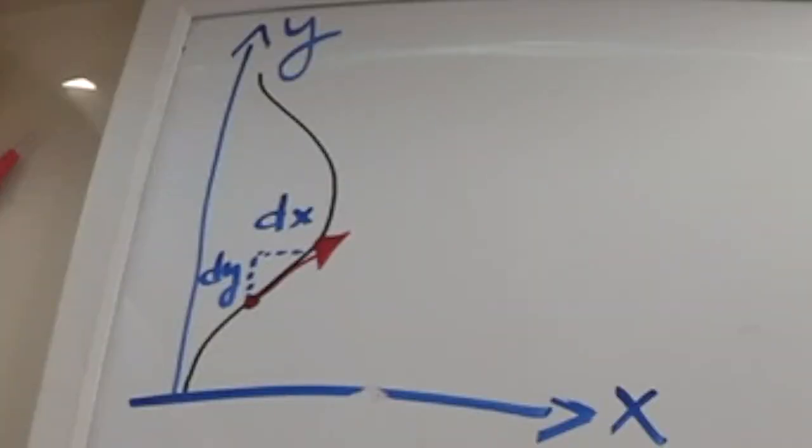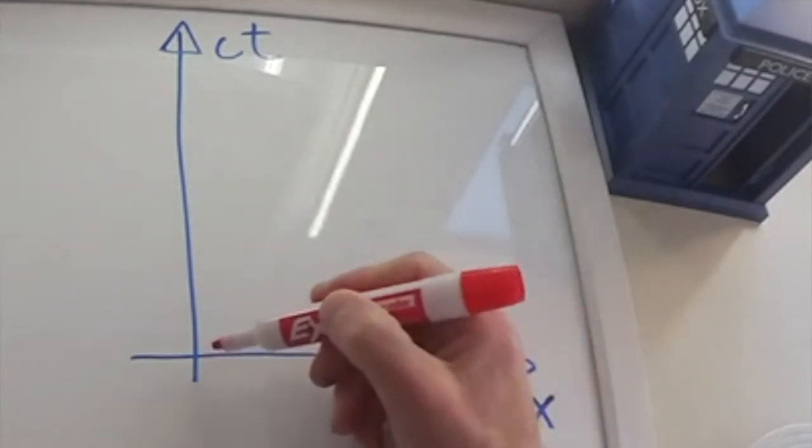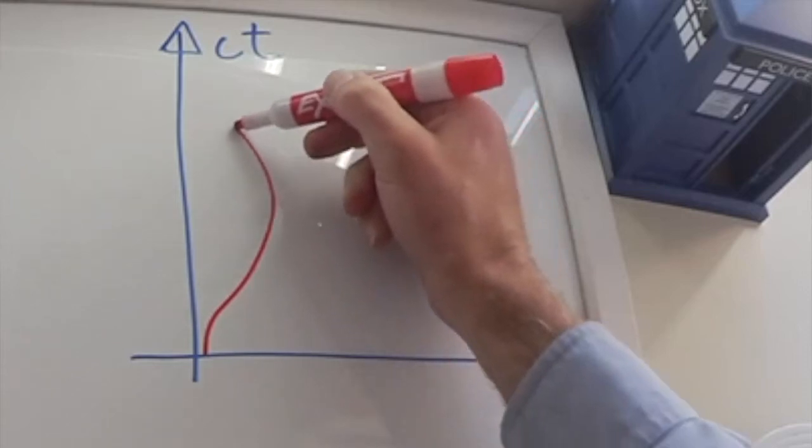In relativity, the trajectory of a particle is represented not in space, but in spacetime. We draw the worldline of the particle. Let's go back to Minkowski's spacetime diagram then.